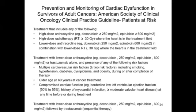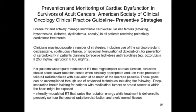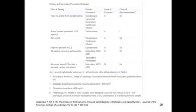For prevention and monitoring, you should get a baseline ejection fraction, and when you reach around 250 mg/m², it's probably worth checking again before continuing treatment. There are some agents that can help: dexrazoxane, which we'll discuss shortly, as well as beta blockers, ACE inhibitors, and ARBs that can mitigate some of this toxicity.